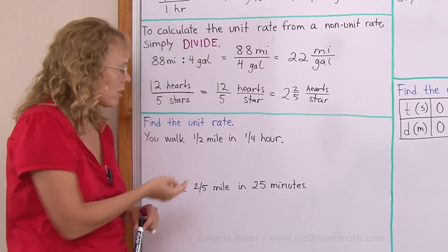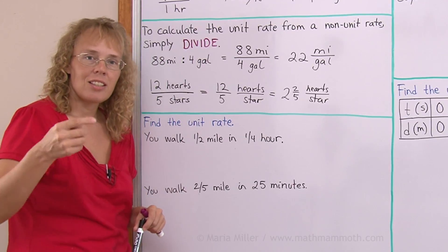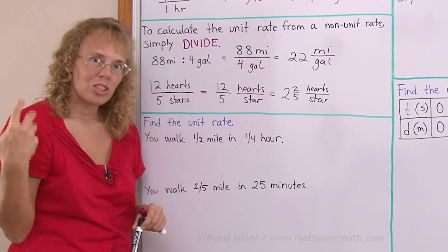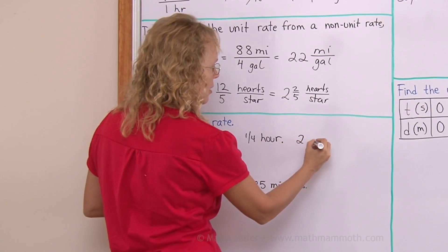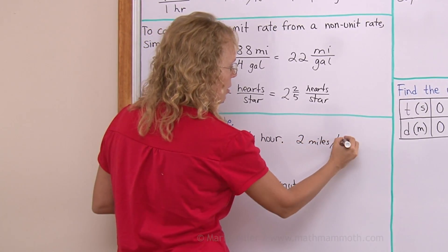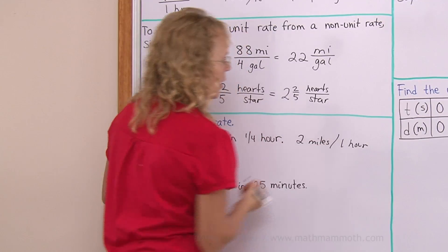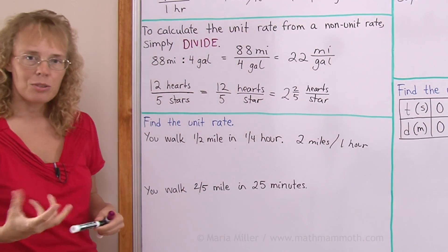then in half an hour, you would walk a mile. And in an hour, you would walk two miles, right? So the answer is two miles per one hour. We just figured it out.